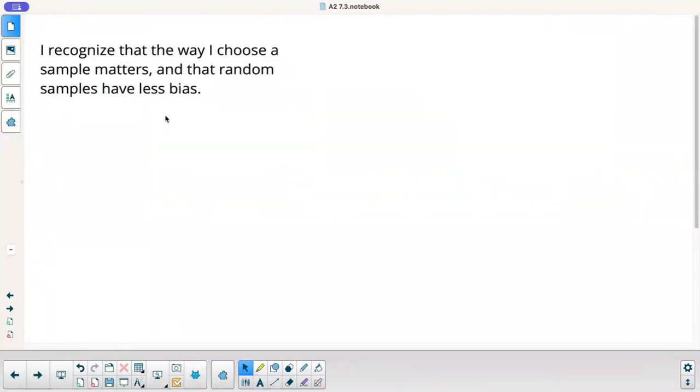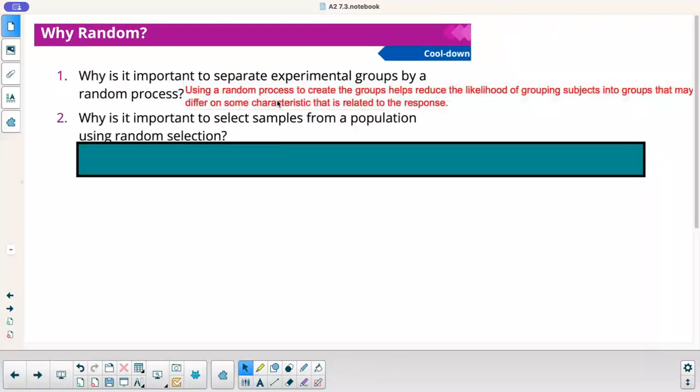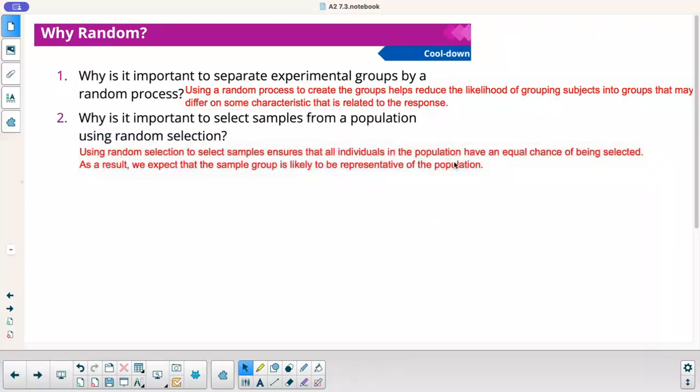Why is it important to randomly assign people to groups in an experimental study? Using a random process to create the groups helps reduce the likelihood of grouping subjects into groups that may differ on some characteristics. You don't want your data to be misleading. Back to our goal. I recognize that the way I choose a sample matters and that random samples have less bias. I think we've kind of addressed that today. Last question on our cool-down. Why is it important to separate experimental groups by a random process? Using a random process to create the groups helps reduce the likelihood of grouping subjects into groups that may differ on some characteristic that is related to the response.